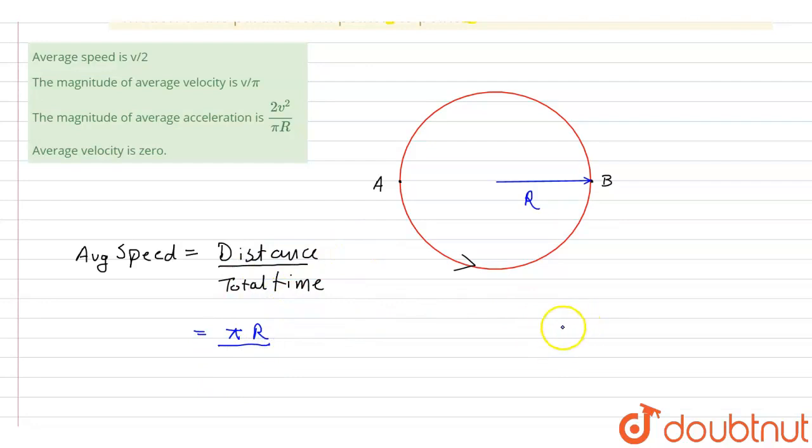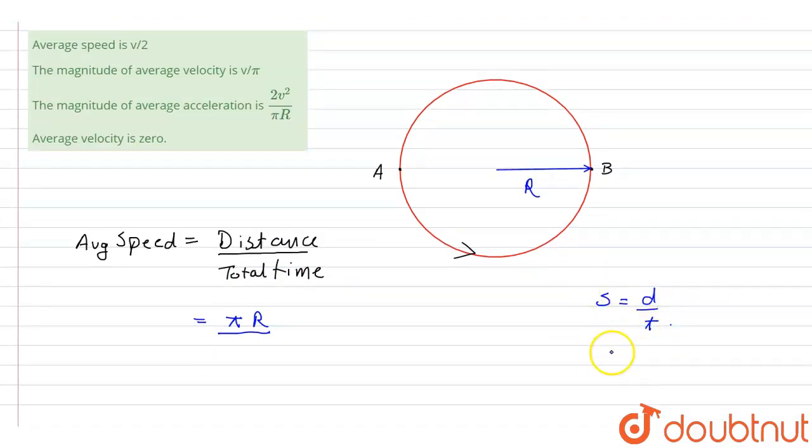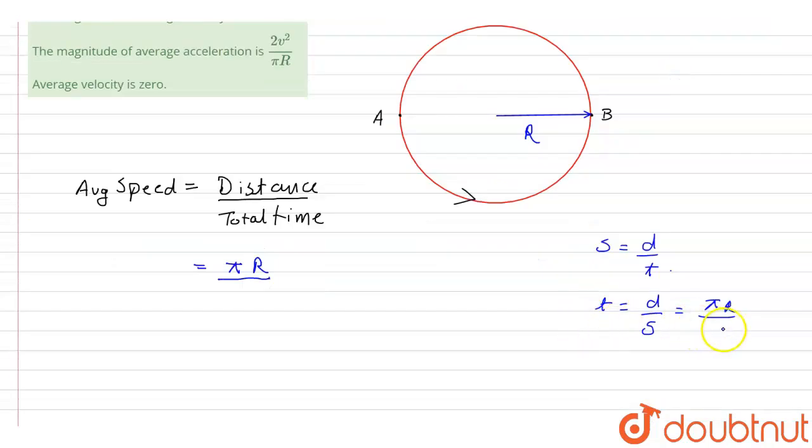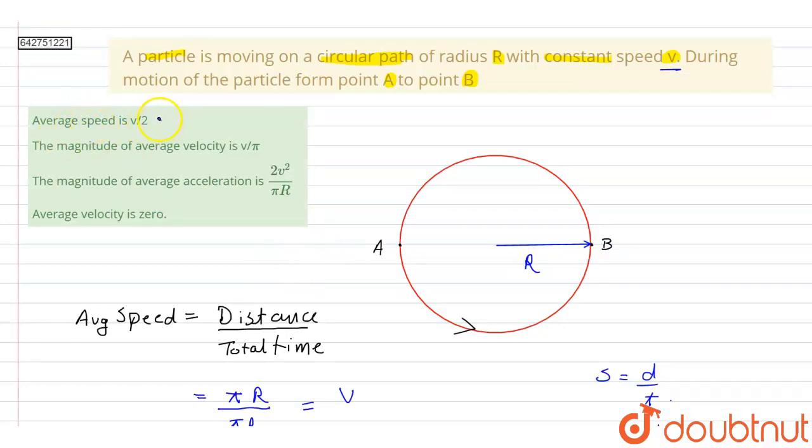Now to calculate total time, we can use the formula for speed. Speed is equal to distance upon time, and from here time can be calculated as distance upon speed. And as we discussed, distance will be pi R divided by speed that is given as V. So this will be pi R by V. So we can substitute this value here: pi R divided by pi R by V. So average speed will be equal to V. Therefore, option 1 will be incorrect.